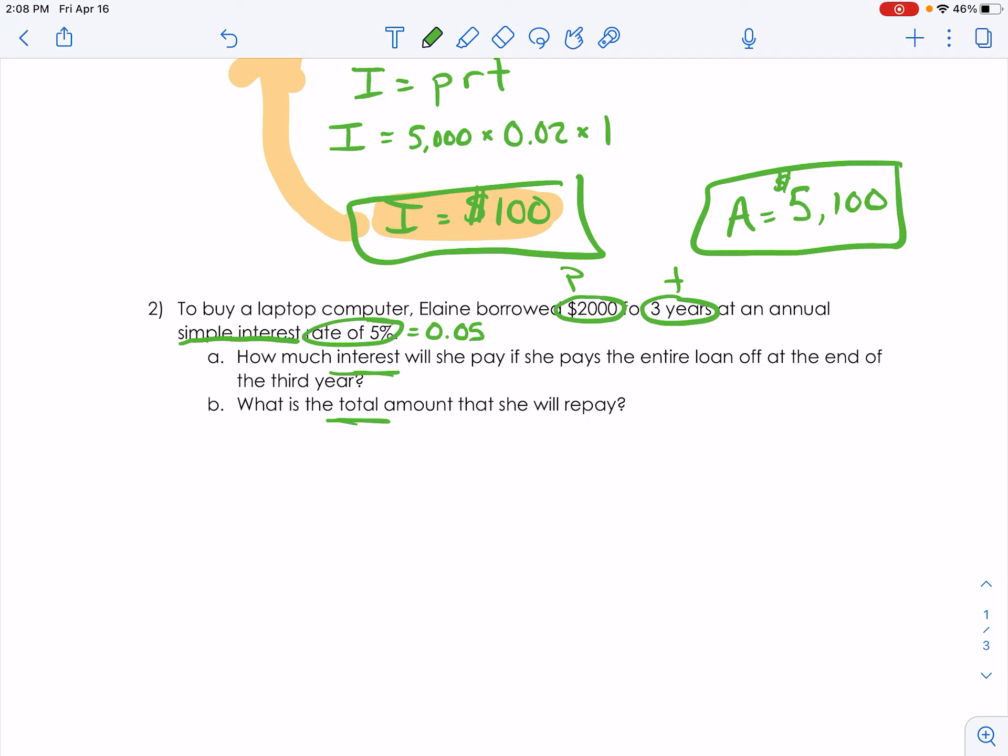So since it's simple interest, we're going to use our simple interest formula. I equals P times R times T. So the principal, the amount that we're borrowing is $2,000.